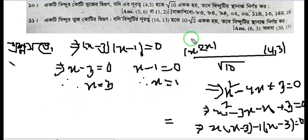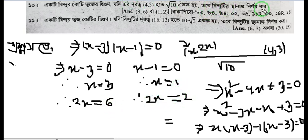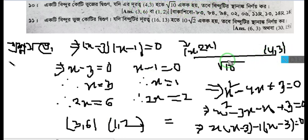Let's verify: if x equals 3, then 2x equals 6, giving us the point (3,6). If x equals 1, then 2x equals 2, giving us the point (1,2). Both of these points satisfy our distance condition.